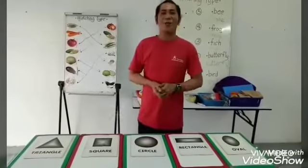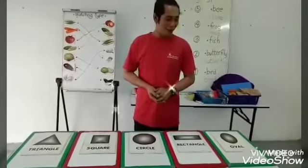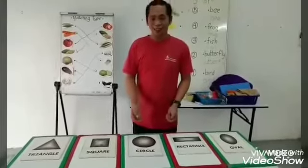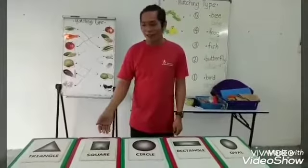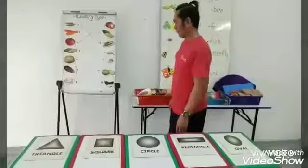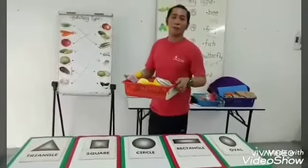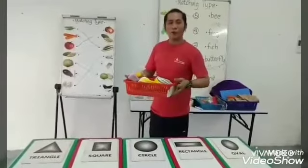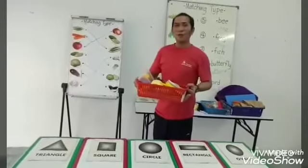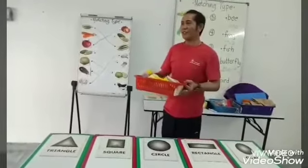Our next matching tag is all about different shapes: Oval, Rectangle, Circle, Square, and Triangle. I have here a tray of examples of different shapes. To help us reveal the corresponding shapes, I would call Saras to identify these things.